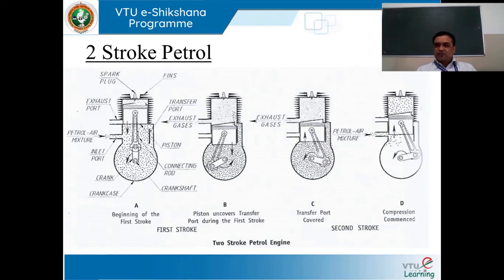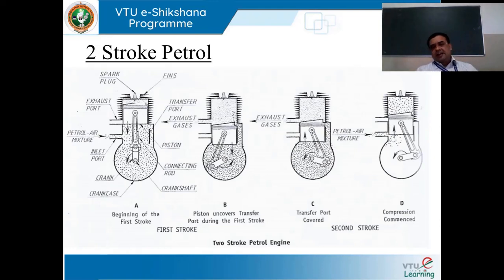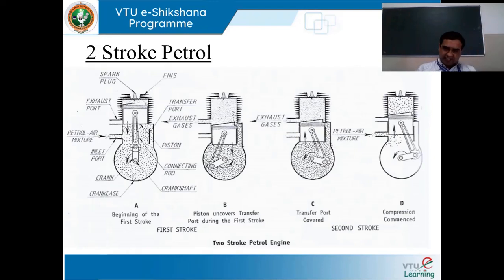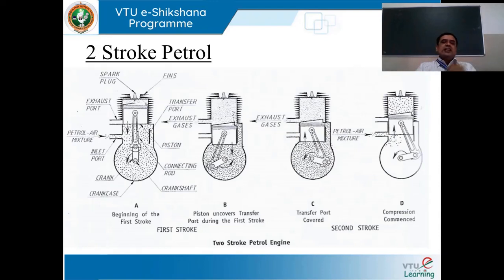But when we see the schematic with reference to the two-stroke petrol engine, normally direct injection of air and petrol will not take place into the engine cylinder. Initially, it gets admitted into the hermetically sealed crankcase and later it shall be delivered to the engine cylinder. This is what we need to clearly understand while learning the mechanism of two-stroke petrol engines.